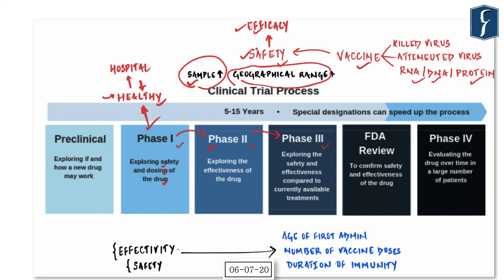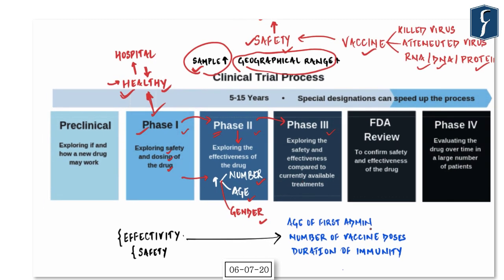Phase 2 is about efficacy — testing whether the vaccine induces the desired immune response protecting against the disease. Since the vaccine is already found safe, the sample size can be safely increased. The sample in Phase 2 is not just larger in numbers but also broader in age, gender, and ethnicity — essentially trying to resemble the actual population to see how vaccine effectiveness varies across different groups.